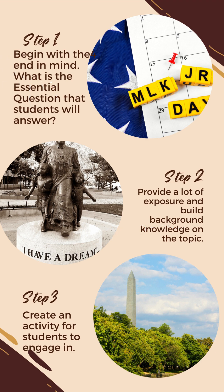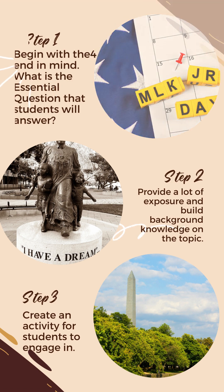Step two: you want to provide a lot of exposure and background knowledge on this topic to your students throughout the course of your instruction. You may have been doing activities where they were able to see that Dr. King has statues devoted to him, there is a museum, there's his church, there's the King Center — talking about speeches, marching, being arrested, or sacrificing for others. You're exposing students to different types of information in different formats, including visual literacy opportunities where they can begin to build their argument.